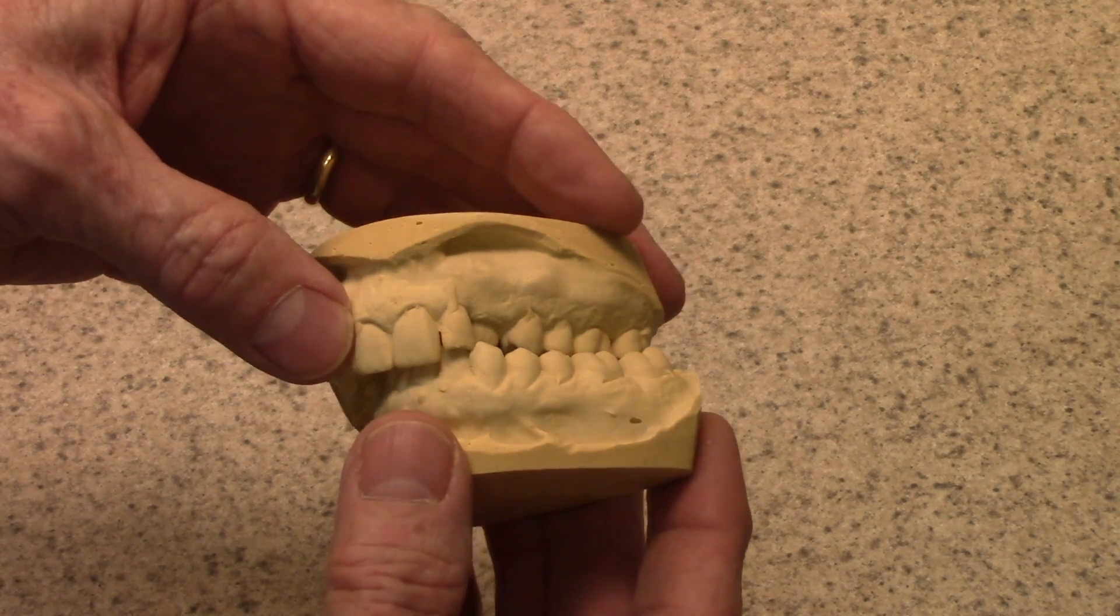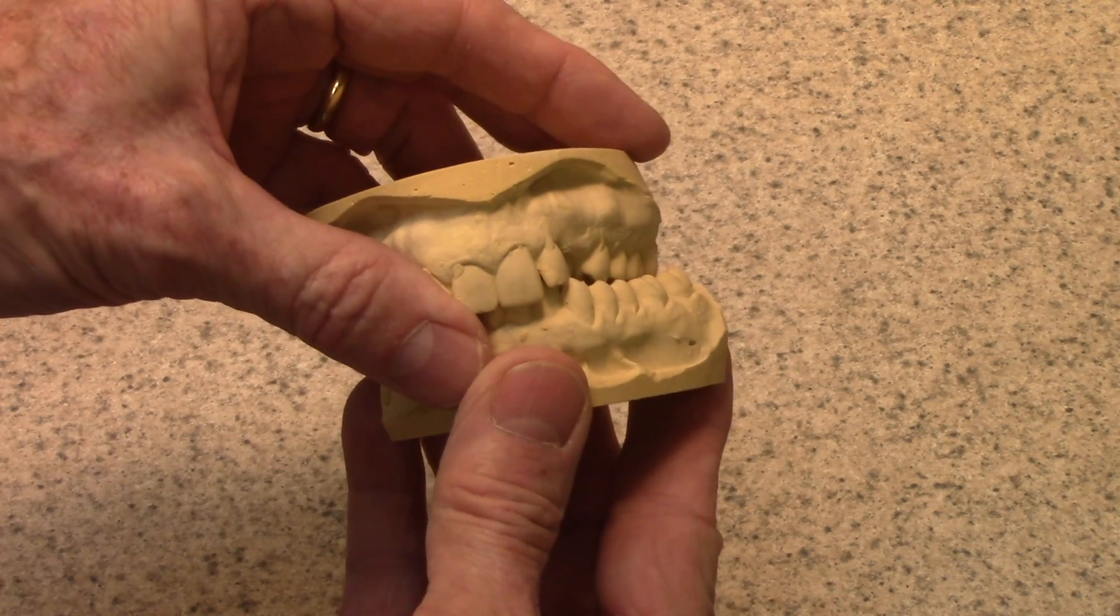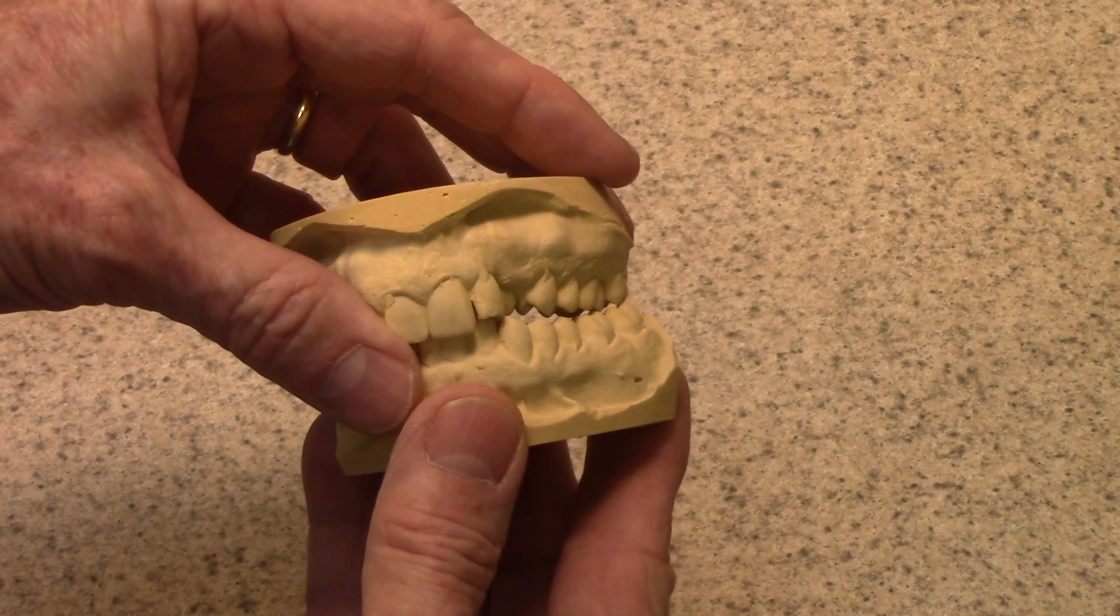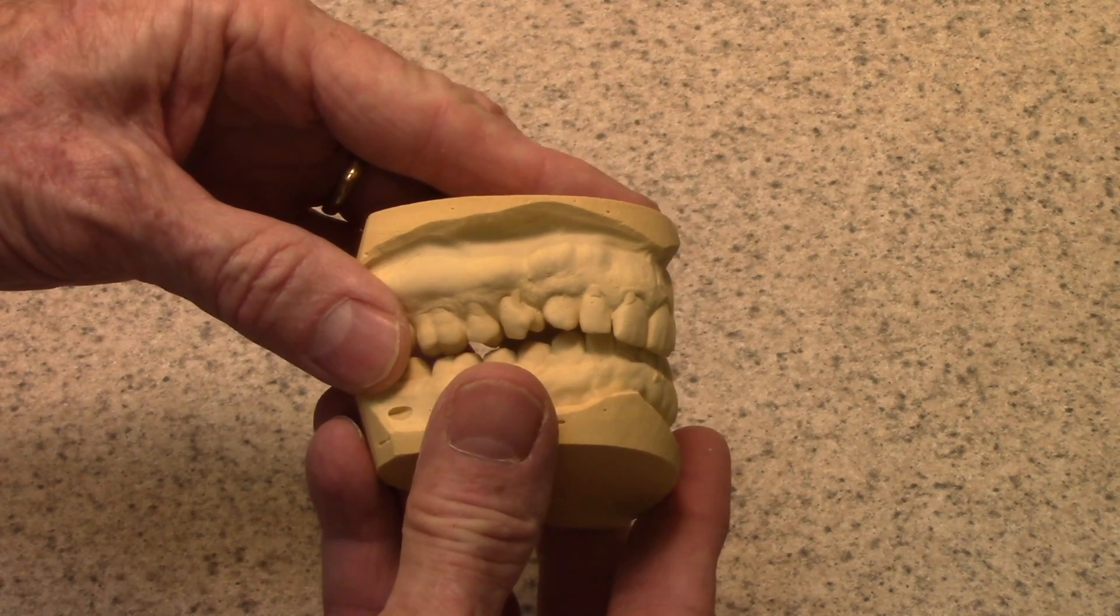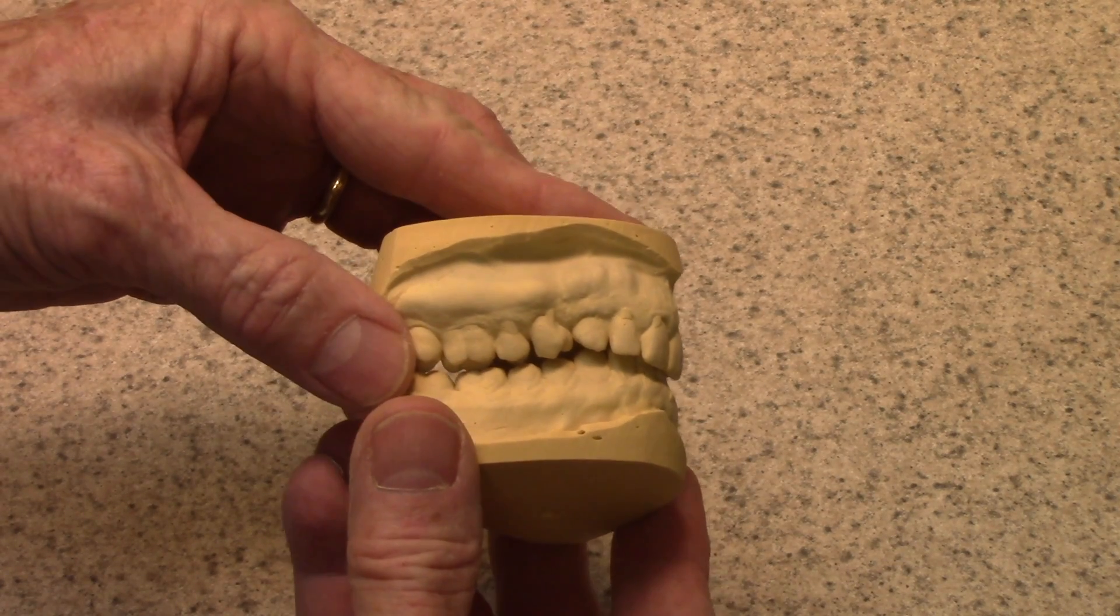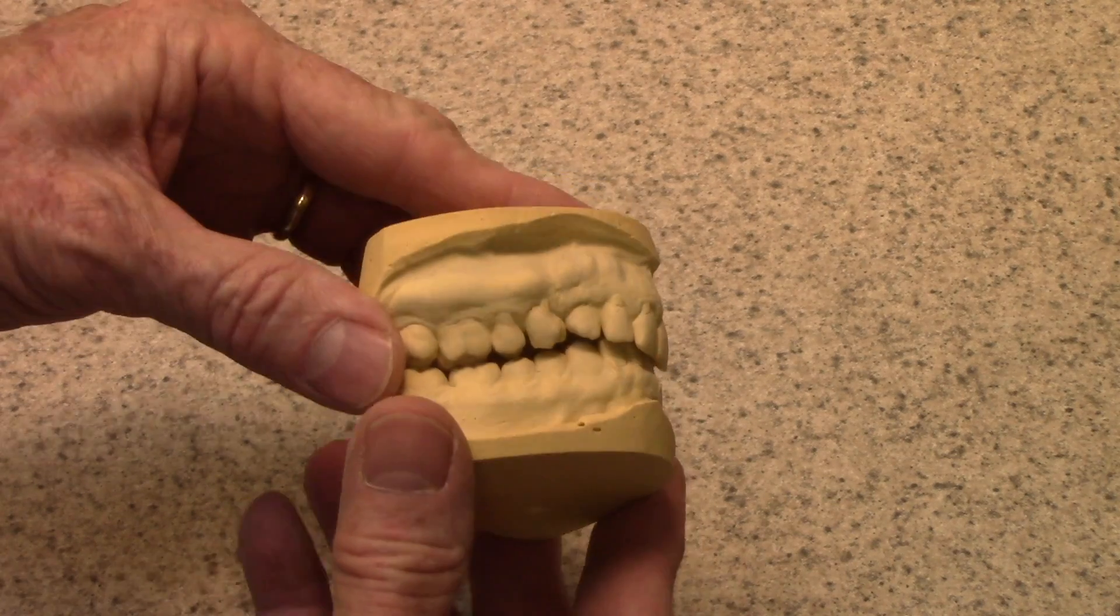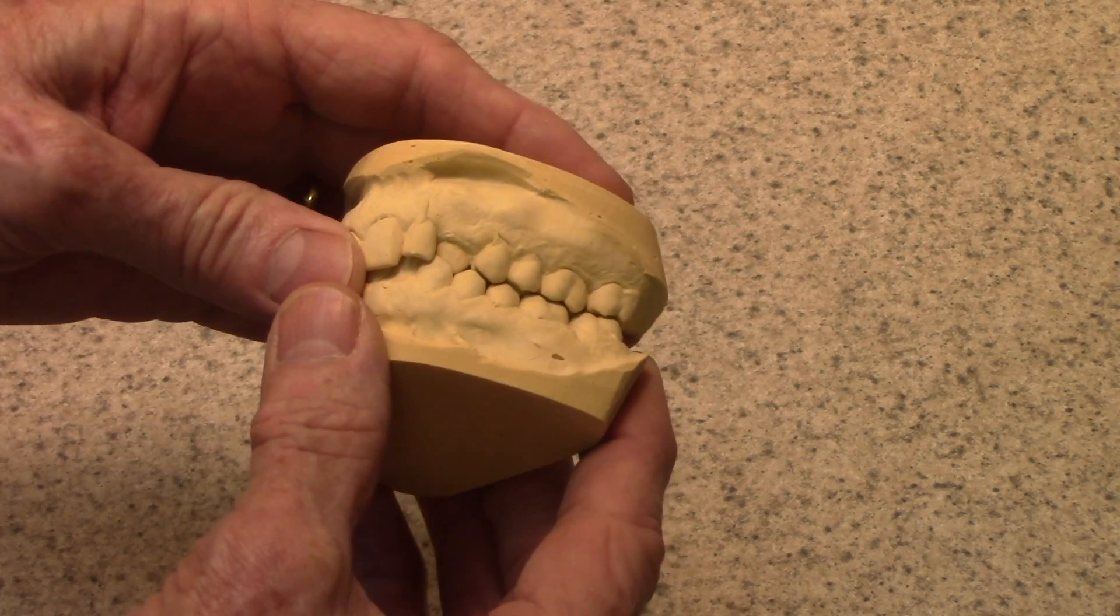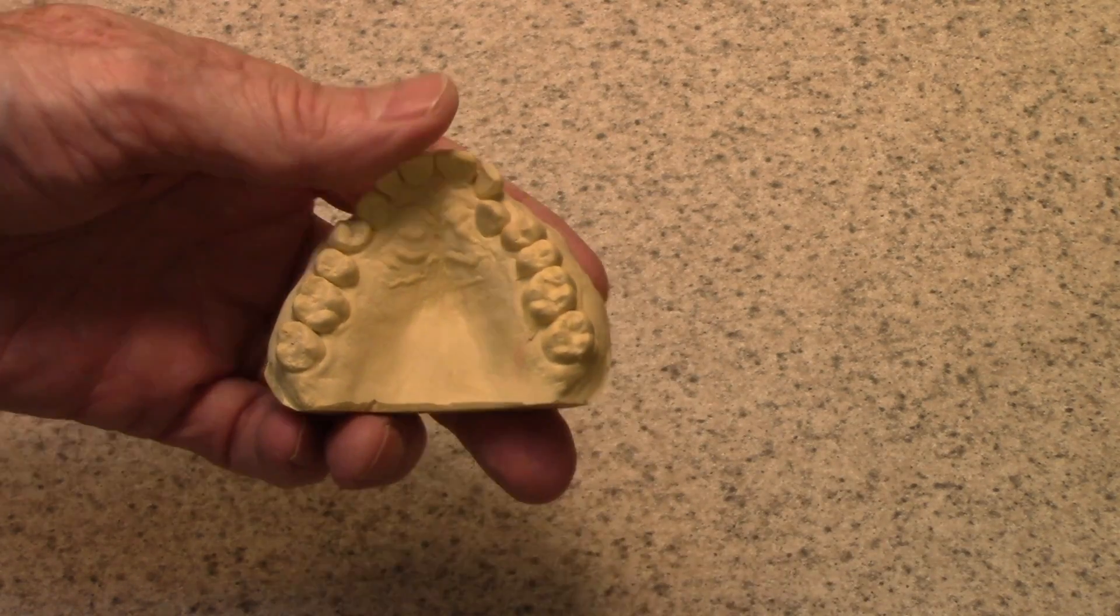Also, the functional resistance would come into play with this as well. So, as this starts to go buccally, it would ride up. And when this rides up, it's also going to cause the other side to ride up. And then that intercuspation that we were using as part of the anchorage mechanism would no longer be applied. So, how do you put force to drive just one side out?